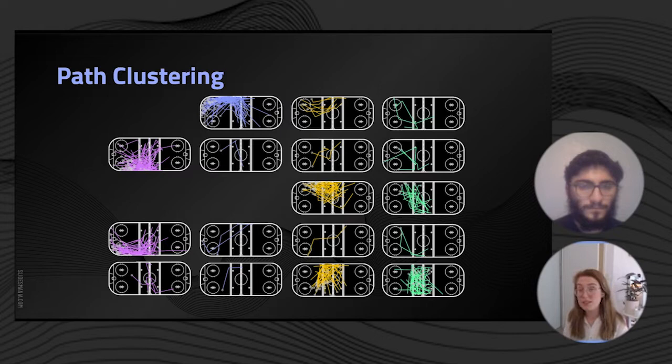Here we can see an example of those clusterings, with there being 17 separate cluster combinations occurring. Our rows are dedicated to being the first or initial pass, while our columns are looking at the subsequent passes and are also what we will mainly be analyzing today.